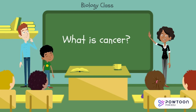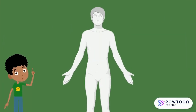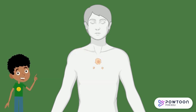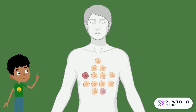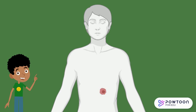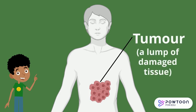Sure, I'd like to. Cancer is a disease in which some of the body cells begin to grow uncontrollably. Normally, human cells grow and multiply through a process called cell division. When cells grow old or become damaged, they die and new cells can take their place. Sometimes this orderly process is disturbed and abnormal or damaged cells grow and multiply when they shouldn't. These cells form what we call tumors, or lumps of damaged tissues.